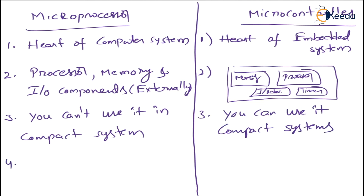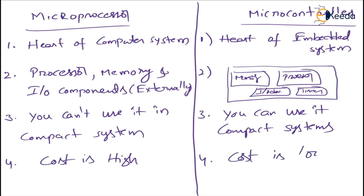Coming to the fourth point — cost. The cost of a microprocessor is high, whereas the cost of a microcontroller is very low. The cost of a microprocessor system is high because you have to buy a CPU, monitor, memory (RAM, ROM), keyboard, and mouse — all these things are required to build a computer.